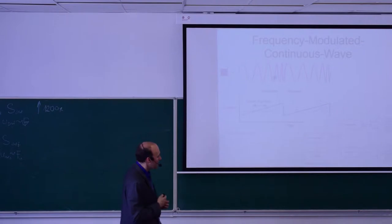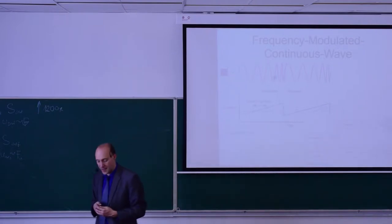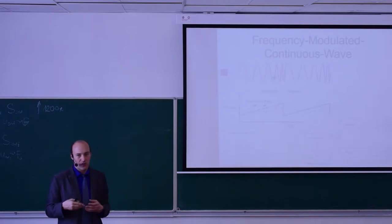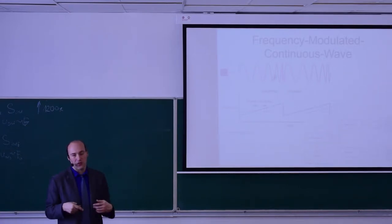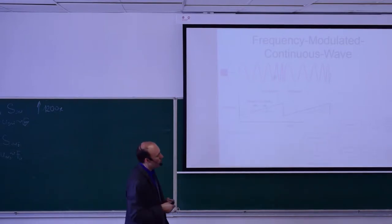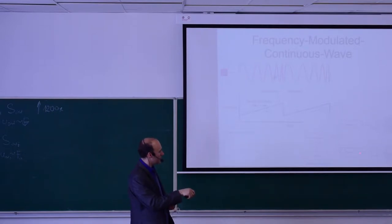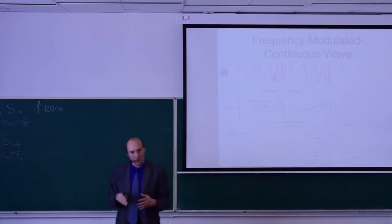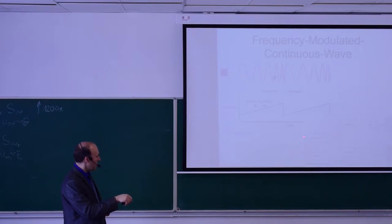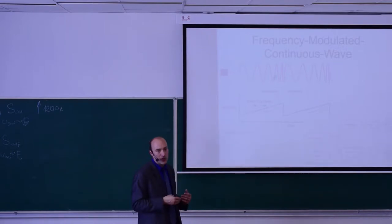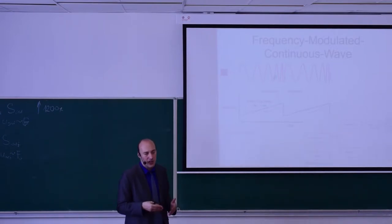You overcome the problem of measuring small time differences by comparing frequencies instead. This is done in a circuit called a frequency mixer, which multiplies the two signals together to get the frequency difference. The transmitter runs independently; you measure the current transmitting frequency, receive the second signal from the receiver, and compare them in the mixer circuit. The result is a frequency difference, which you demodulate — converting the frequency difference into distance — and the output signals the object's distance.